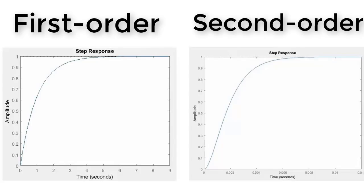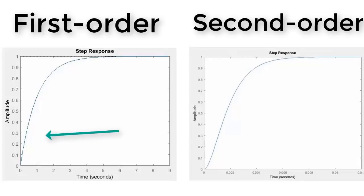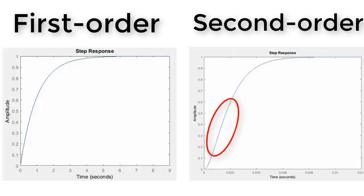Now suppose that you get a step response that looks similar to the first order step response — how could we tell the difference between a first and second order step response when there is no overshoot? There are two ways. First, by looking at the slope of the response at time equals zero, that is the time at which the response starts. In a first order step response, the slope when the response starts is at its maximum. But in a second order system, the slope when the response first starts is at its minimum — it starts at zero. Another way to tell the difference: in a first order response, the curvature is the same throughout, but in a second order response, the curvature switches, meaning there's an inflection point about halfway along the response. If you find this kind of inflection point, then you know your system is second order.